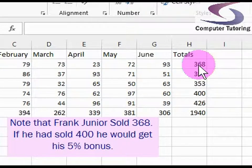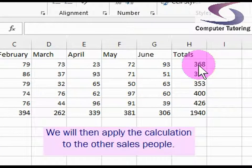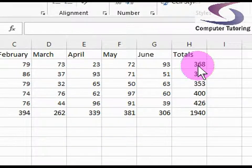What we're going to do is make sure that if they hit their target of 400, then they will receive a bonus. And that bonus will be 5% of their total. So we're going to be quite generous there.